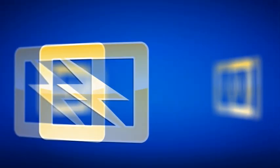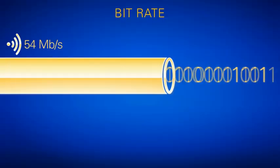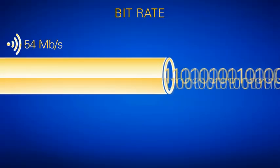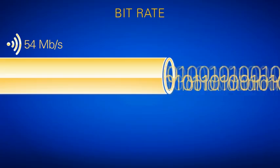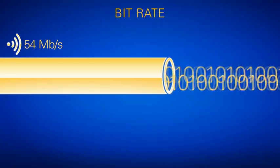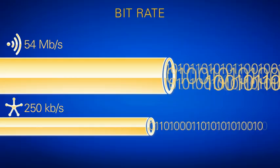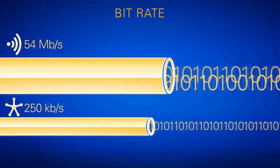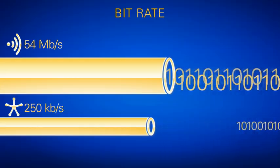The next characteristic to consider is max bitrate. 802.11's max bitrate is 54 megabits per second — that is the highest throughput you can achieve with Wi-Fi. ZigBee only allows 250 kilobits per second. That's a big difference in bandwidth between the two.